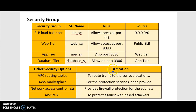I would also like to use VPC routing tables to help route traffic, AWS Marketplace for all the security that it can provide, network access control lists to provide firewall protection for the subnets, and AWS WAF to protect against web-based attacks like SQL injections, etc.